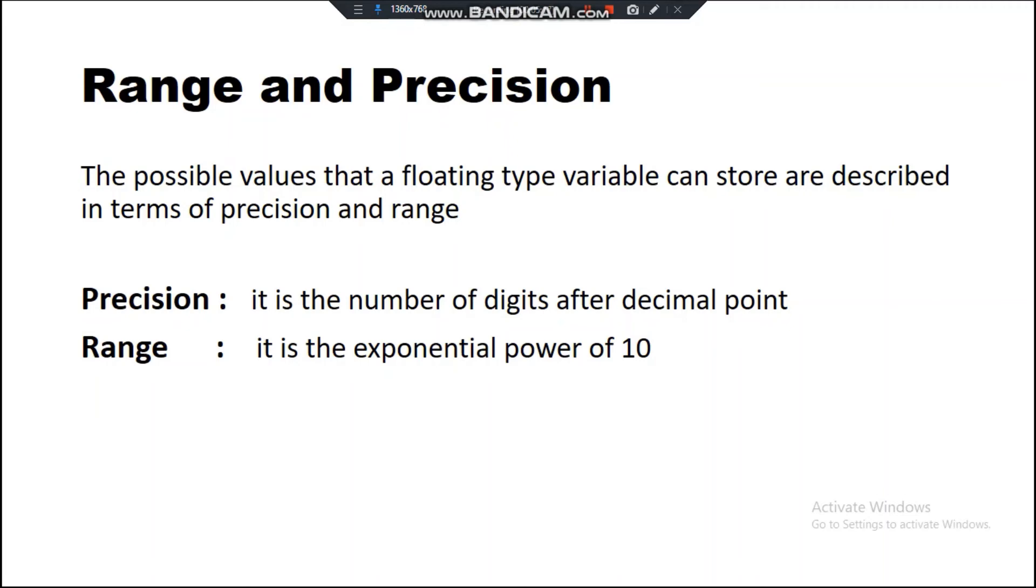We can describe in the form of range and precision how much data a variable stores. Precision is the number of digits after the decimal point. After the decimal point, how many digits we want to store.